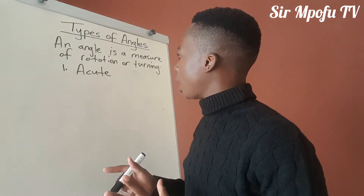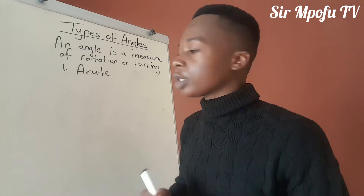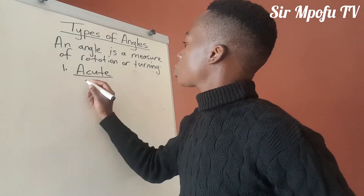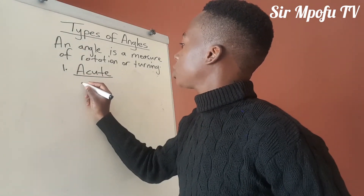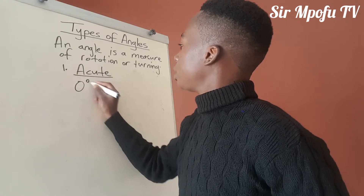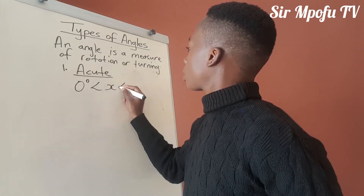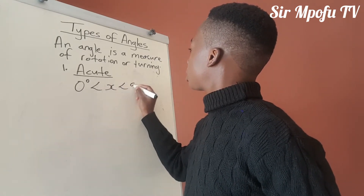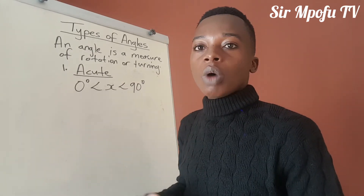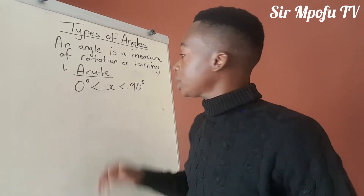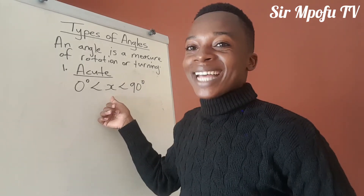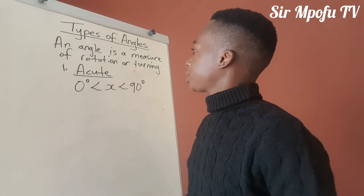I'm going to use X to represent the angle. So it means an acute angle, it will look like this. That is what we call an acute angle — it will be less than 90 degrees.